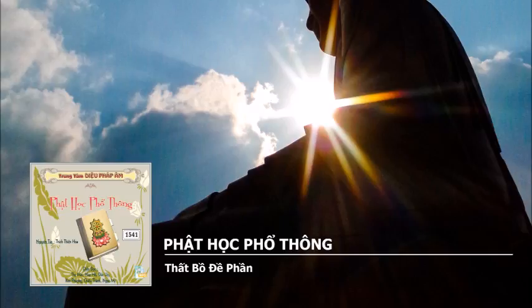Kết luận: Tóm lại, người tu bảy pháp Bồ Đề Phần này chắc chắn sẽ được bốn kết quả quý báu sau đây: Một, tất cả pháp ác đều được tiêu trừ. Hai, tất cả pháp lành càng ngày càng tăng trưởng. Ba, vì thường tu thiện đoạn ác nên luôn luôn được an lạc, không bị đau khổ. Bốn, sẽ chứng thành Phật quả.